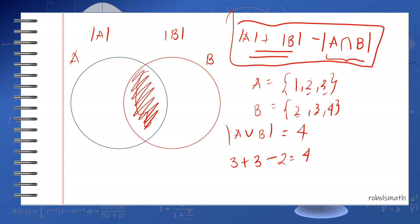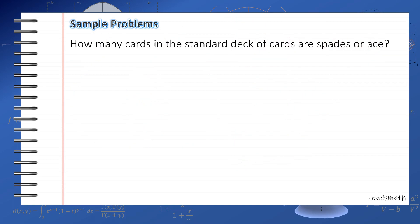Let's try it for a word problem. The question is: how many cards in a standard deck of cards are spades or aces? Let's draw circles. Let this be the set of spades and this is the set of aces. How many spades are in a standard deck of cards? That's 13. How many aces in a standard deck? That's 4: ace of hearts, ace of spades, ace of clubs, ace of diamonds.